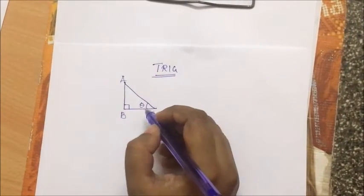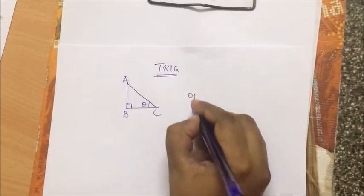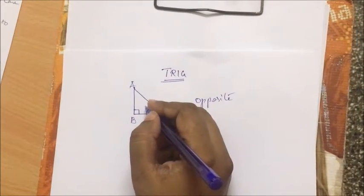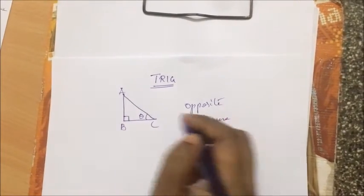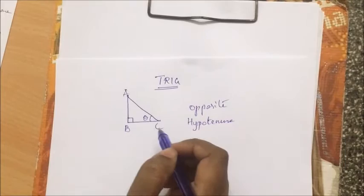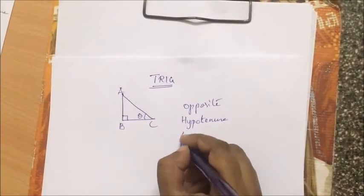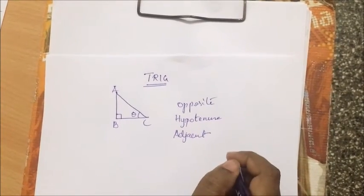First, let me label the diagram so that this is ABC. The side which is opposite to theta or angle C becomes opposite. The side which is opposite to the 90-degree angle has a special name, and that is hypotenuse. The side which is next to angle C, or part of the angle C, is called the adjacent.